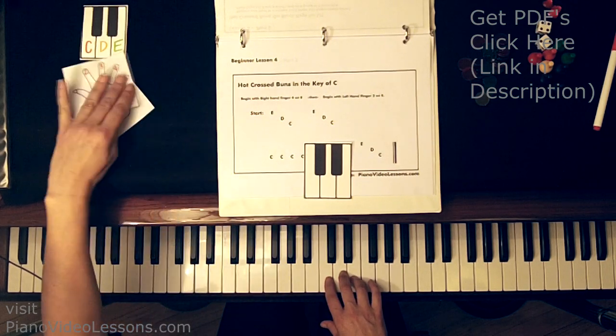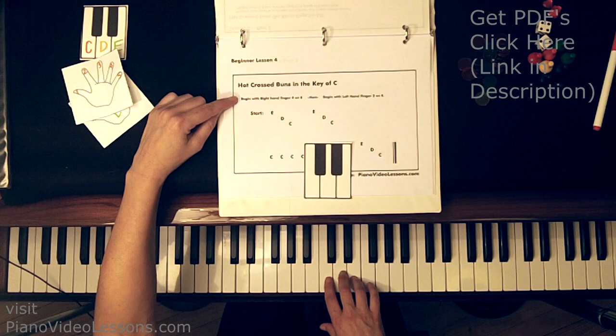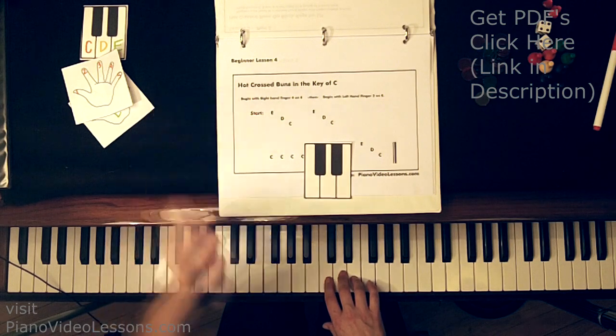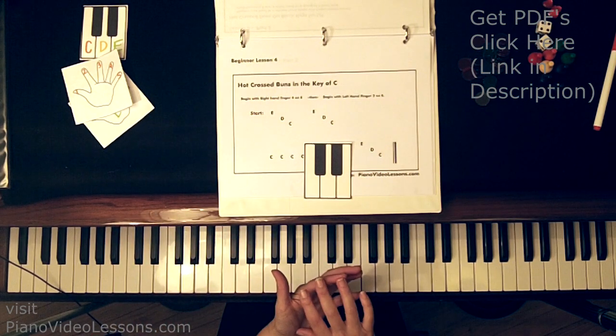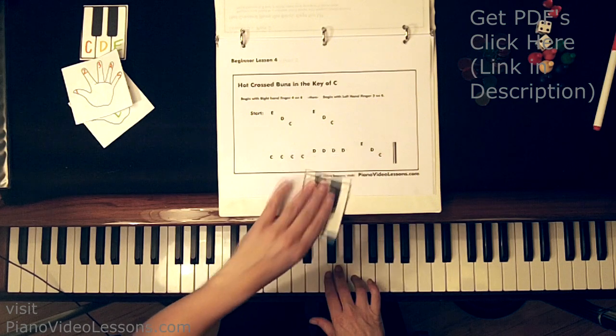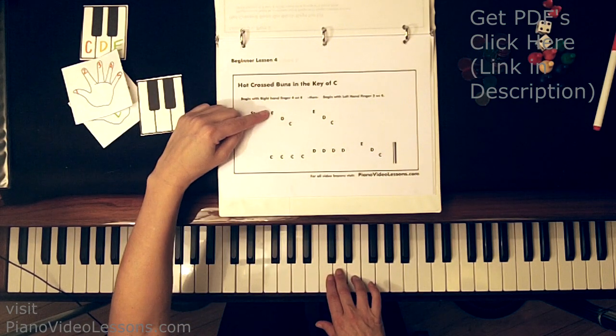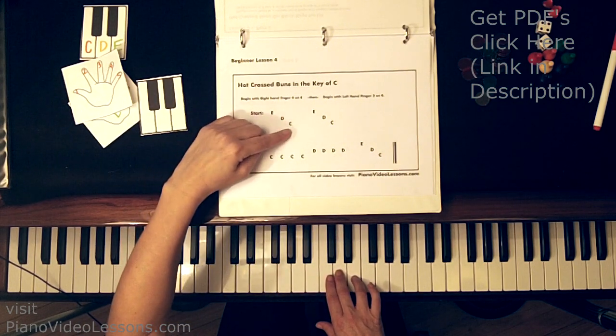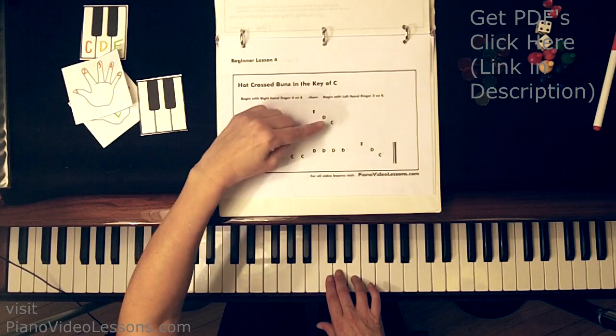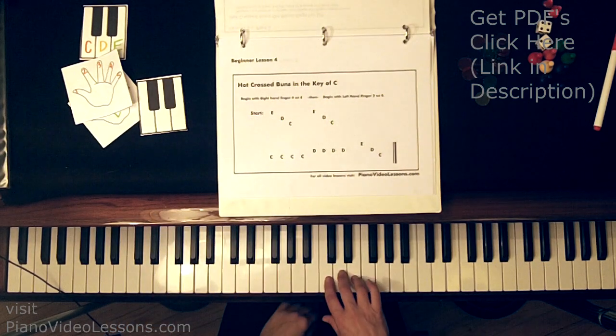So the lesson on the page says, begin with right hand finger 4 on E. So here's right hand, finger 4 on E. Now the pattern begins with E, D, C, and then E, D, C. So let's try that.